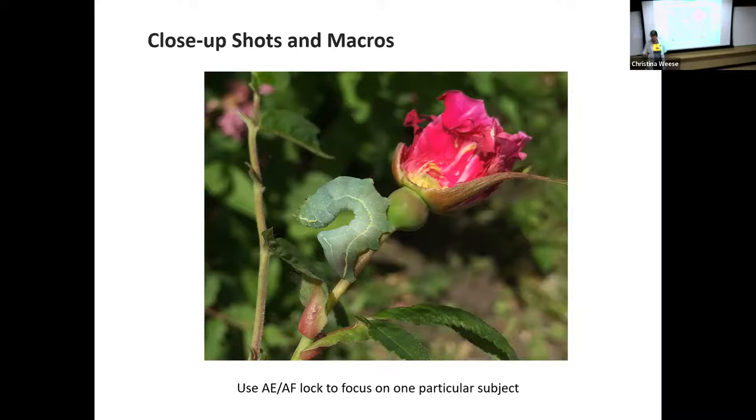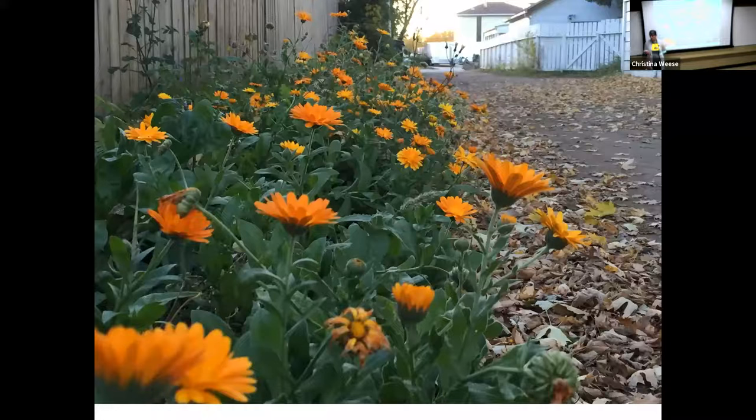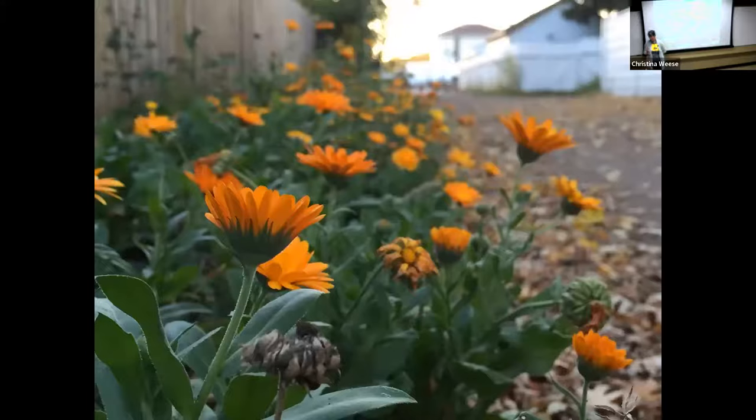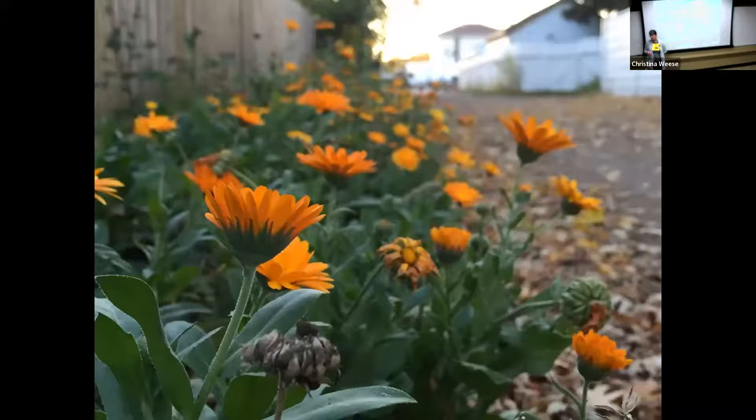You can also swipe up. Once you have that little box locked, there'll be a little sunshine icon. You can swipe up on it or swipe down, and it will make the photo brighter or darker. If you're having exposure problems, you can slide down to make the photo darker. Sometimes that means your subject will pop out better if it's a very bright subject on a very dark background. If your whole photo is too dark, you can slide up and try and get more light in there.